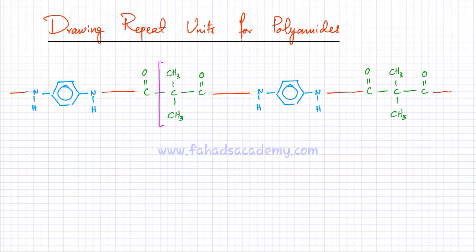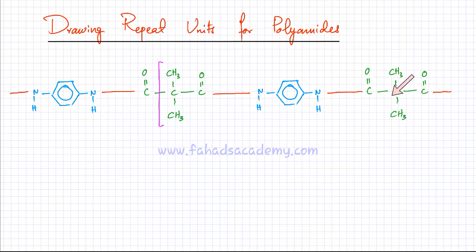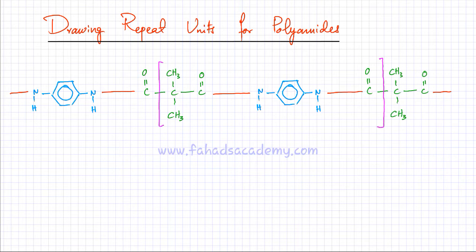I'm going to follow the polyamide chain and see at what point it starts repeating again. As you reach this point, you can see that this CH2, CH2 group starts to repeat again. So you end it over here — this is your repeat unit, because after this point your chain is basically repeating again. This is what you do when looking for a repeat unit and a more concise notation.